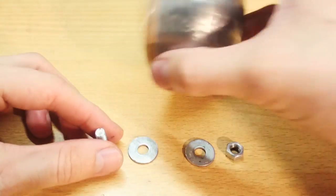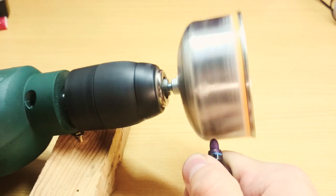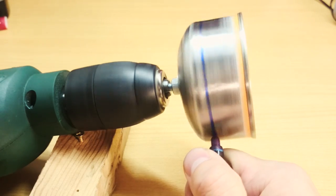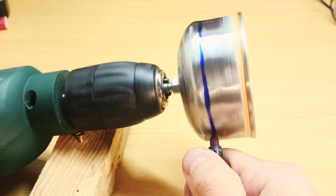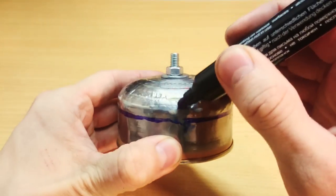You should get a thing like this. Fix it in a drill and make a circular mark around the can at a distance about 4-5mm from the cylindrical part of the centrifuge.